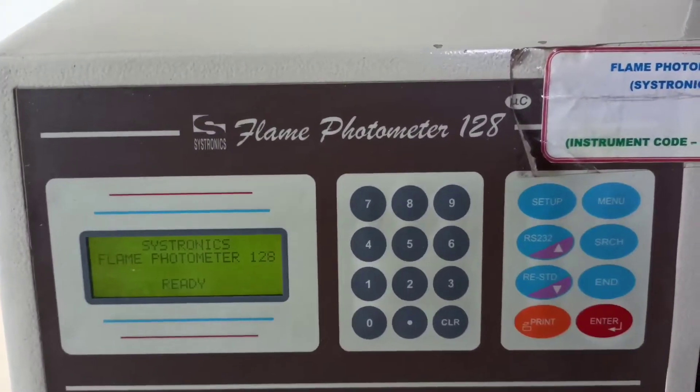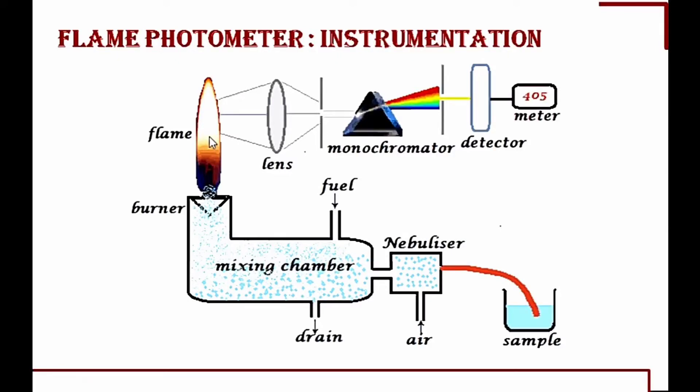Here is what the whole instrument looks like, along with a schematic diagram of the flame photometer. The sample in liquid state is converted by the nebulizer to vapor state — just like a deodorant spray. The nebulizer works like that compressor. It then mixes with the fuel in the mixing chamber and builds a flame. Each cation produces a different flame color and different intensity of light. The light moves through a lens, then to the monochromator and photodetector, and we get the result in mg per liter.